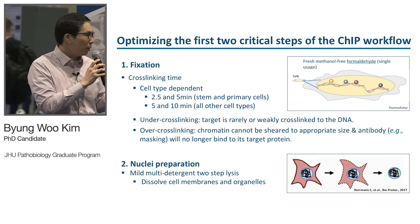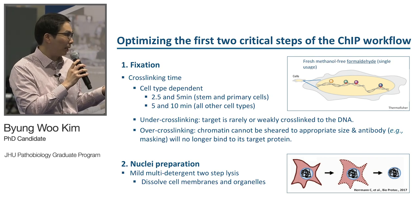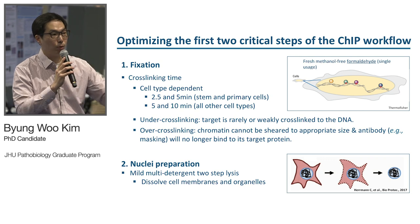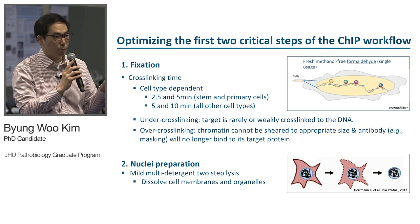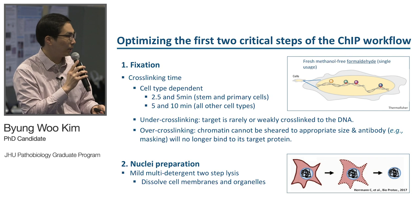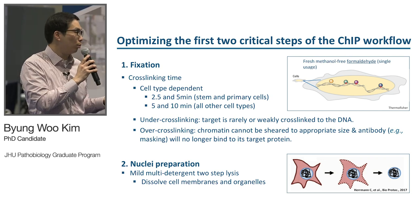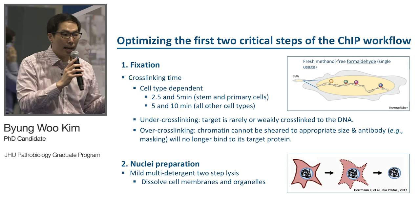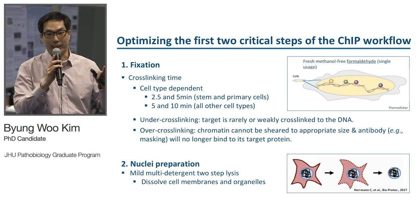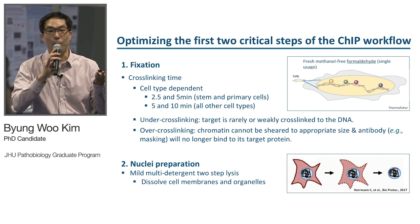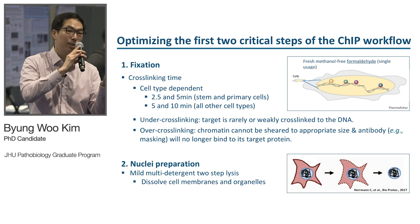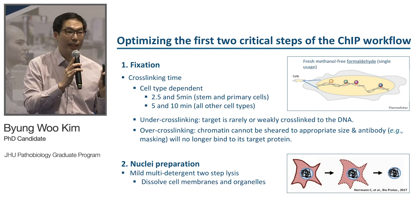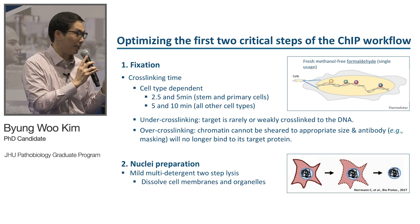If you under-cross-link, this is problematic because your protein and DNA will be cross-linked very weakly, which will affect downstream applications. If you cross-link too much, chromatin cannot be sheared to appropriate size, and also the epitope of the protein will be masked so the antibody won't be able to bind to the epitope. So determining ideal cross-linking time is critical.